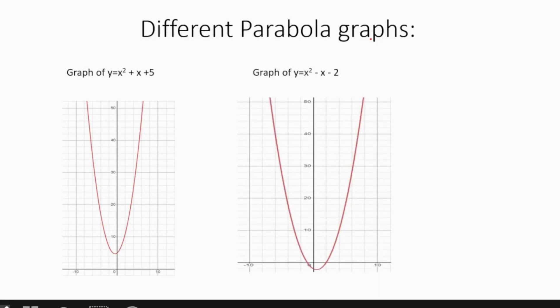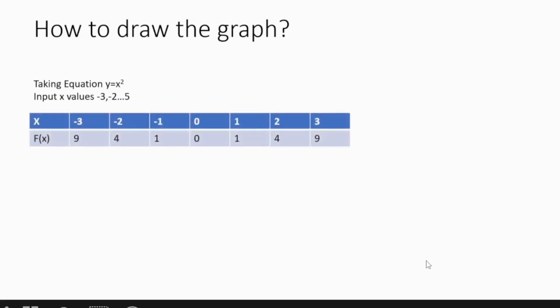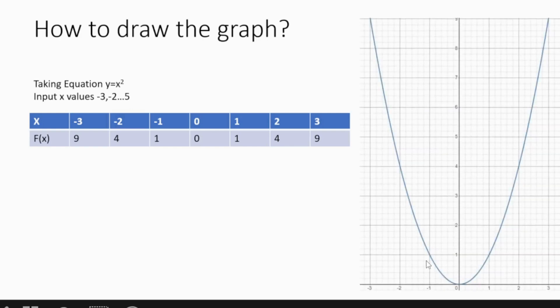Alright, let's check out how to find the coordinates of these graphs. Let's take the equation y = x² and input x values from -3 to 5. As you can see I drew a table with all the values. When you put these x values into the equation you get the corresponding y values, since f(x) = y. This is the graph we will get — just like the previous one.